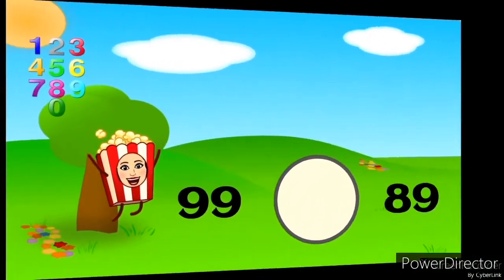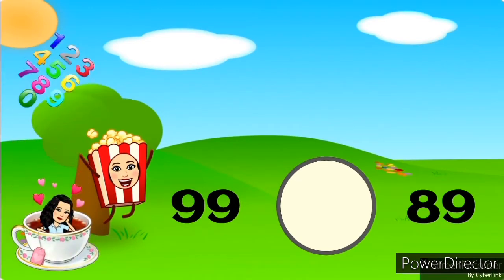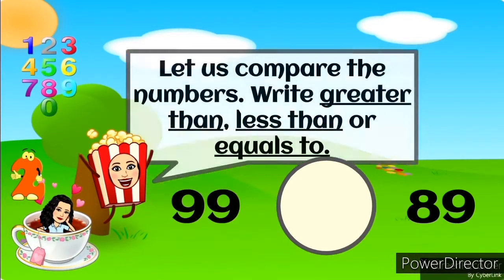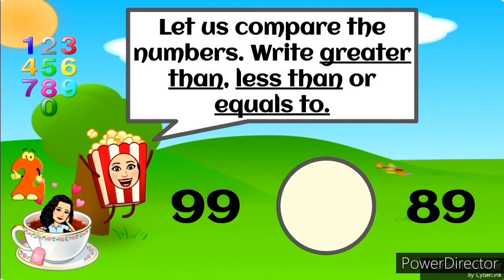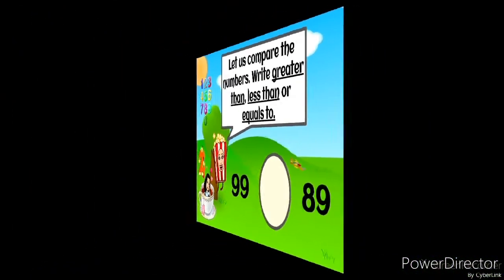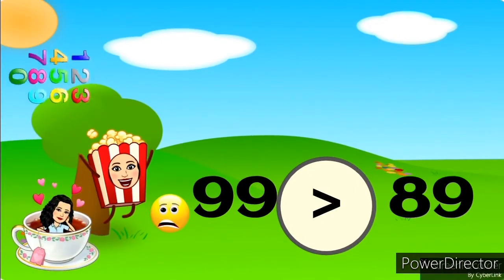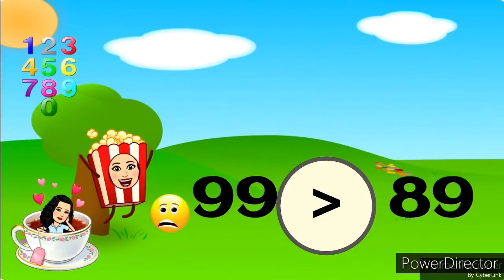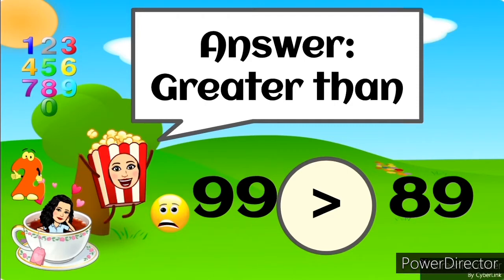Now, here's the next one. We have 99 and 89. And the answer is greater than, because 99 is bigger compared to 89.